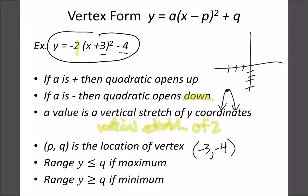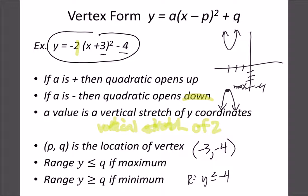Now we're going to look at what the domain and range is. The range tells us the up-and-down values, and whether we have a max or a min. Because it's opening downwards, we have a maximum value of negative 4 — that's as high as it goes — so our range is y less than or equal to negative 4. If the graph happened to be going upwards, that would give us a minimum, and we'd say the range is y greater than or equal to that value.